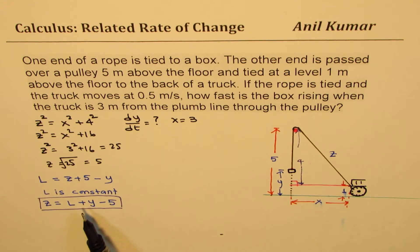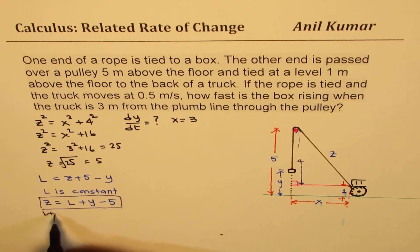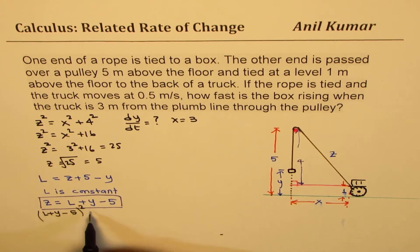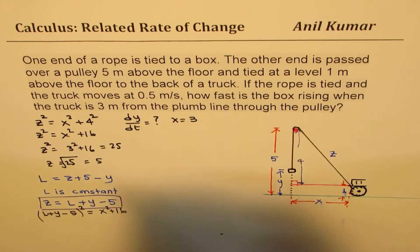And what is the equation now for us? We'll replace this Z by L plus 5 minus Y. So let me rewrite this as (L plus 5 minus Y) squared equals X squared plus 16. I'll rewrite this on the right side and then we'll further solve.